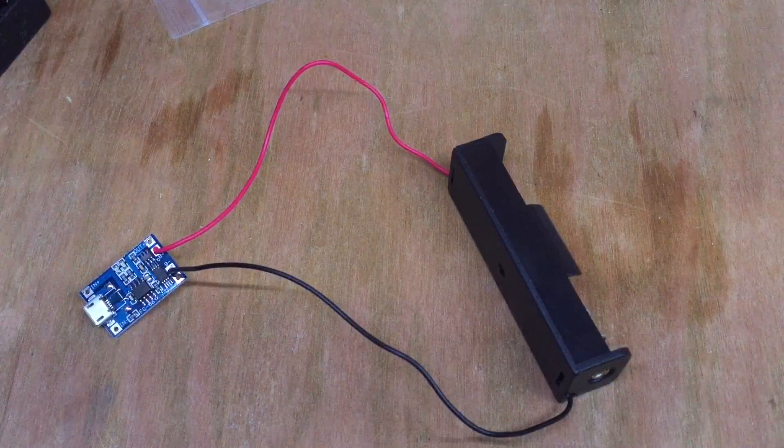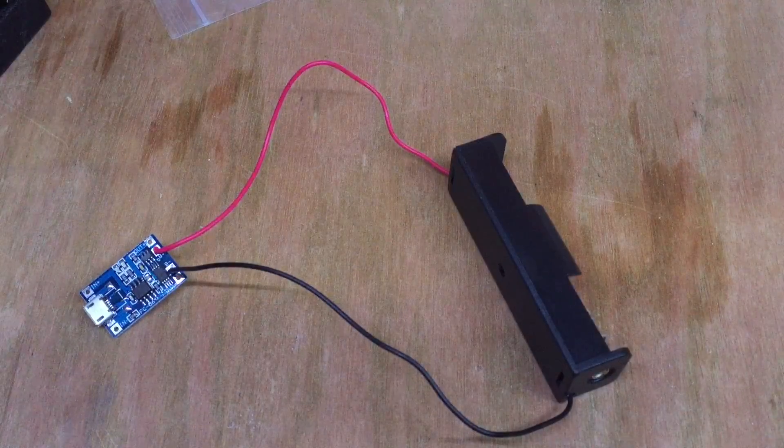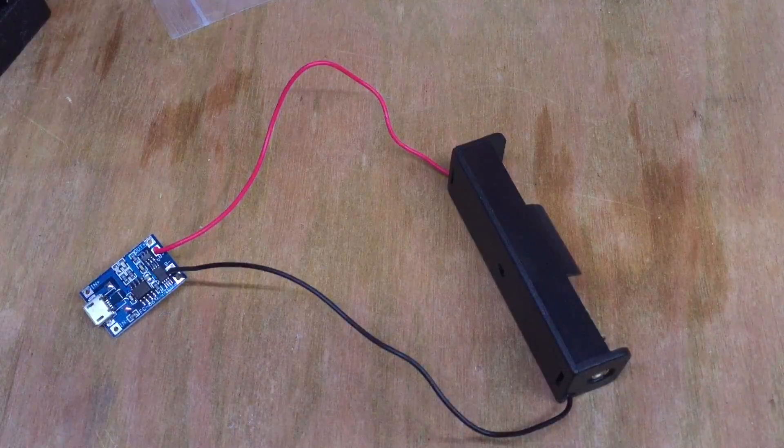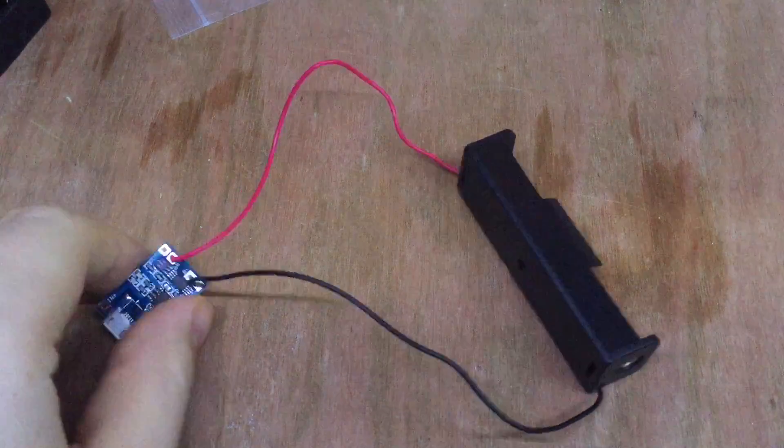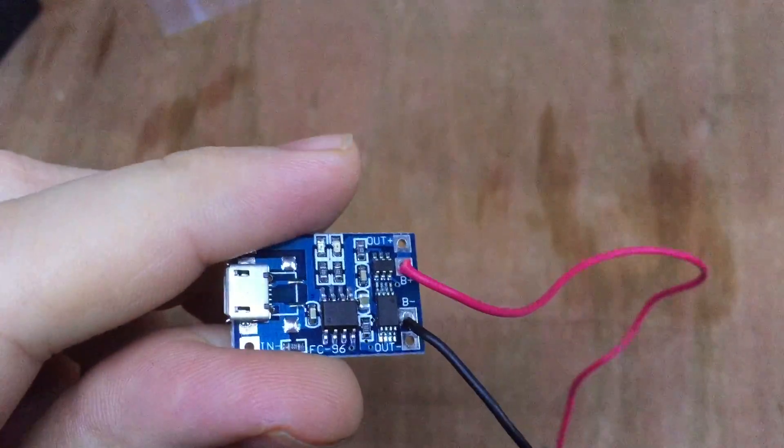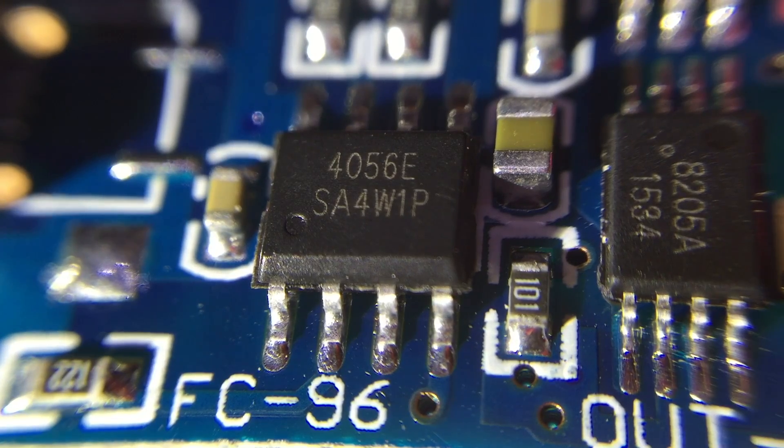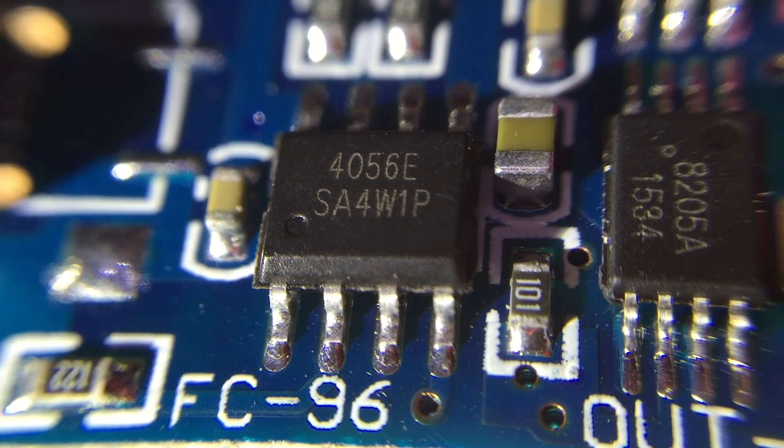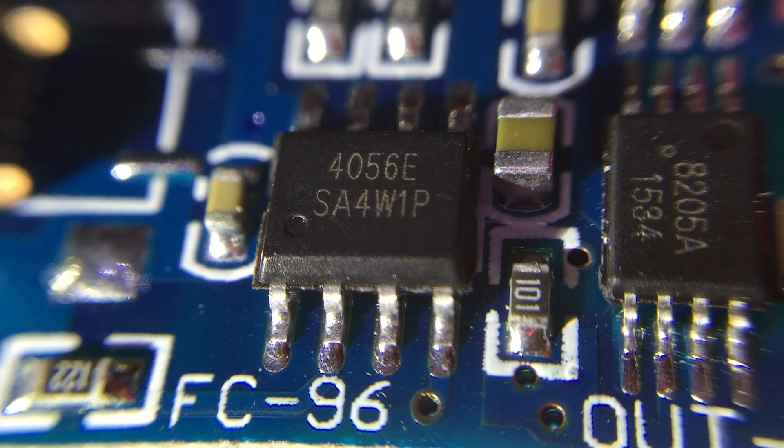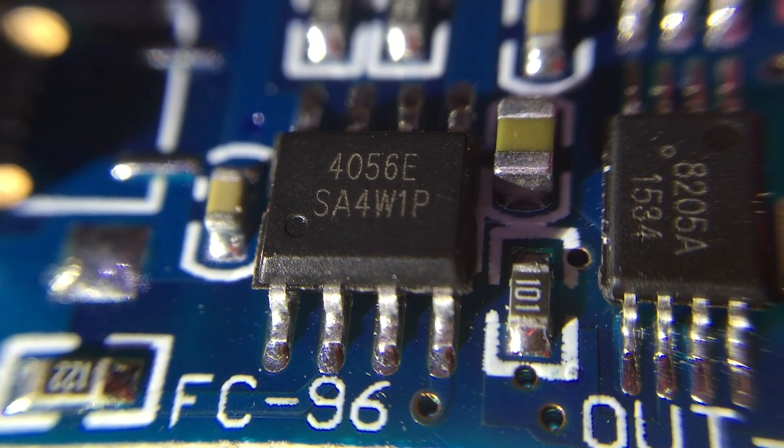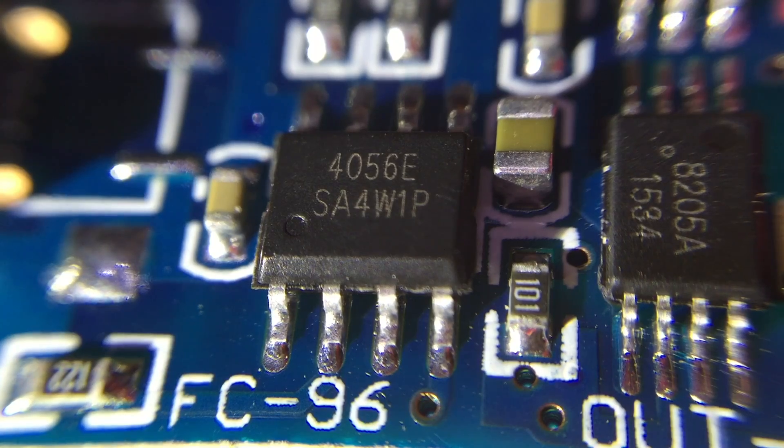So it soon became apparent that using my Ming-He DC-to-DC converter wasn't going to be a sustainable way of charging 18650 batteries. So I bought a couple of these little boards. It's the TP4056 8-pin IC, and this is a chip that's been designed from the ground up to charge lithium-ion batteries. And I think there's a MOSFET in there to turn off the charging, and you can change one of the resistors on one of the pins to change the charging current.